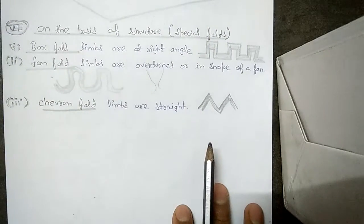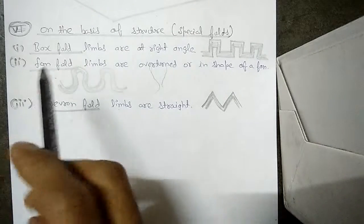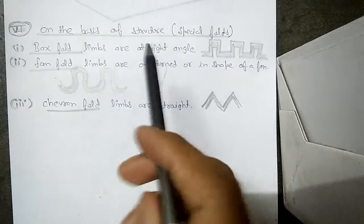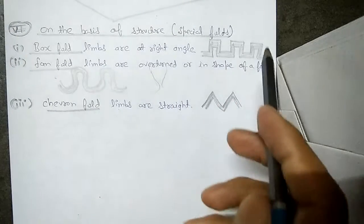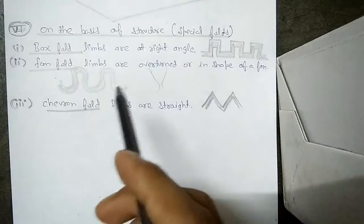The last categorization is on the basis of structure, or these are also called spatial folds. The first one is box fold. Box folds are those folds in which the limbs are at right angle or form a box-like structure. You can see these box-like structures are formed and the limbs are at right angles, 90 degrees.